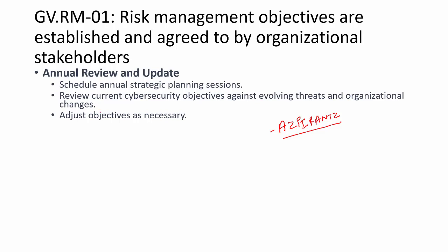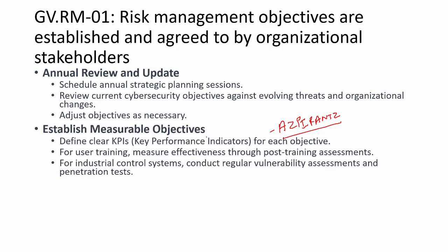We establish measurable objectives by defining KPIs for each objective. For example, after understanding the organization context for Aspirants, we identified the company wanted to build an incident management process and implement a cloud security strategy. Based on that we defined KPIs: reduce phishing susceptibility by 50%, and reduce vulnerabilities in the ICS by 30% through regular vulnerability assessments and pen tests.